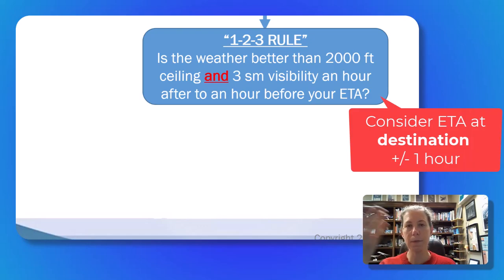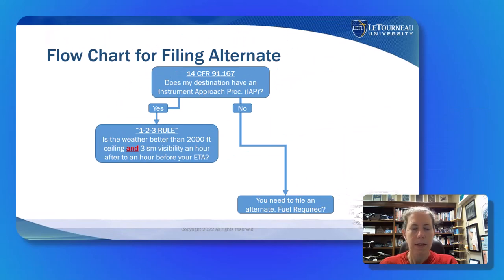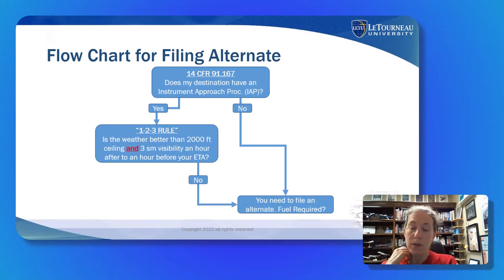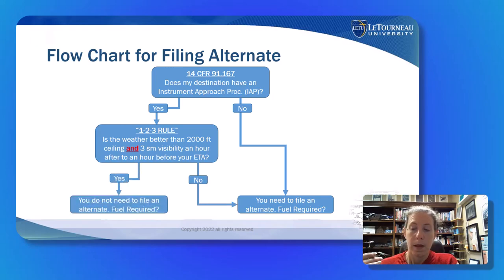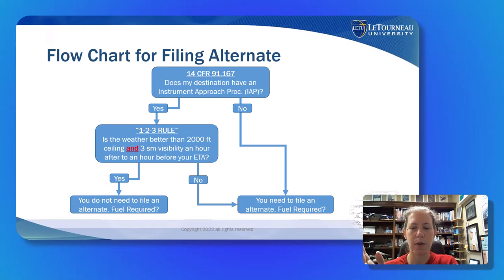Is the weather at least a 2000-foot ceiling and at least three miles visibility within that one-hour-before to one-hour-after window at my destination airport? If the weather meets or exceeds those criteria — the 1-2-3 rule — then I do not need an alternate. But if the weather is not at least 2000-foot ceiling and three miles visibility in that window, then I do need an alternate.